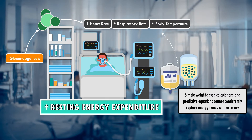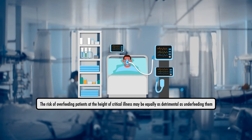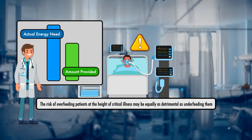Simple weight-based calculations and predictive equations cannot consistently capture energy needs with accuracy, and access to indirect calorimetry, which can do this, remains low. Furthermore, the risk of overfeeding patients at the height of critical illness may be equally as detrimental as underfeeding them, as it's associated with various complications. Thus, in many cases, clinicians are left in a position where the actual energy needs are unknown, some percentage of the energy requirement is satisfied through nutrition support, but an energy gap remains that causes the breakdown of skeletal muscle.